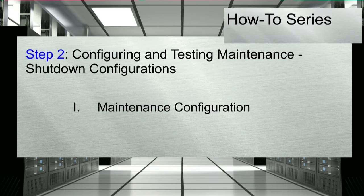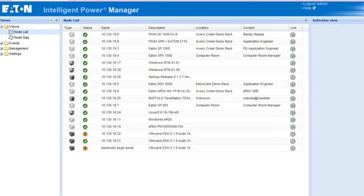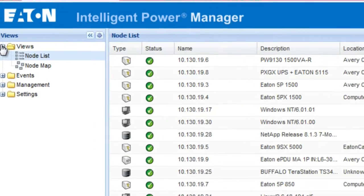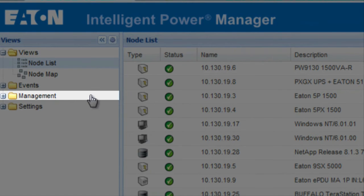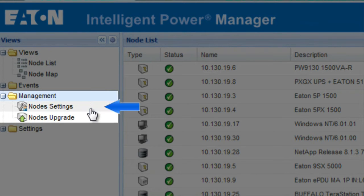We will begin by reviewing the maintenance configuration. Once the UPS supporting the selected ESXi host experiences a power event, IPM will trigger maintenance mode. As maintenance mode initiates, VMware's vMotion tool will migrate all of the virtual machines onto the other available ESXi hosts. In order to set the parameters, start from the IPM Views screen. Select the folder titled Management and click on the option for Node Settings.